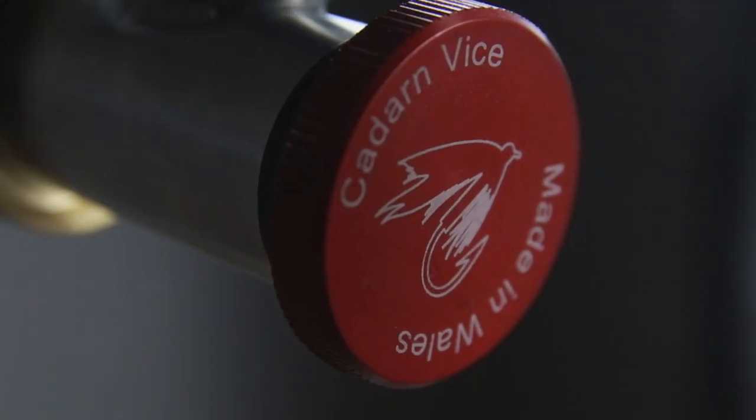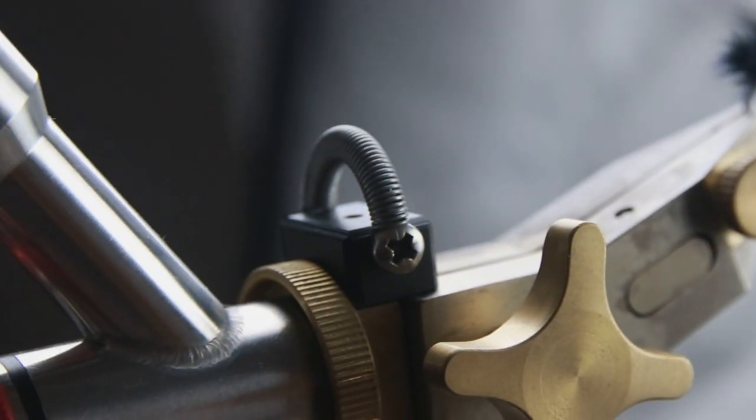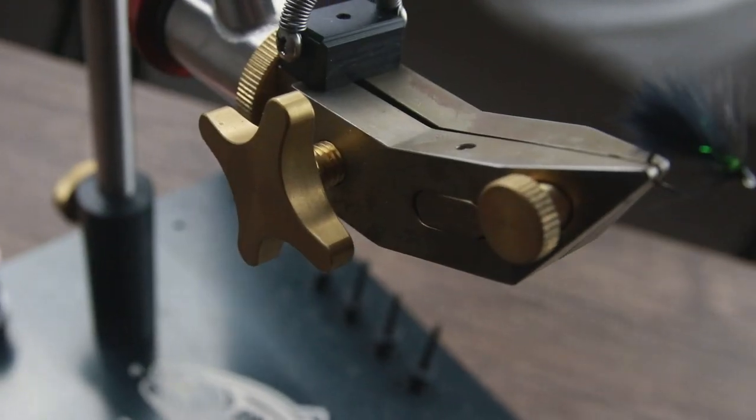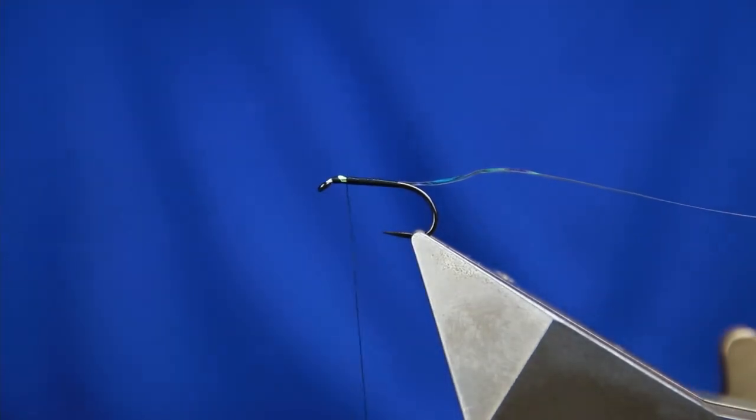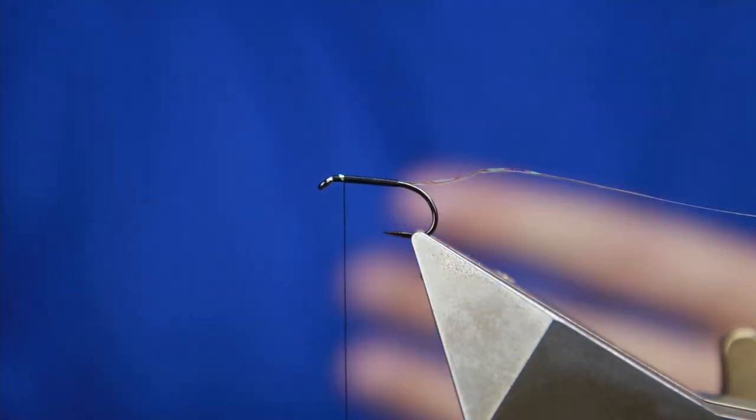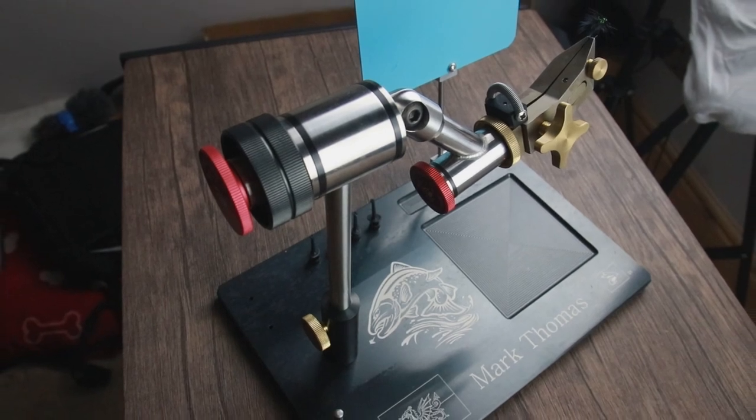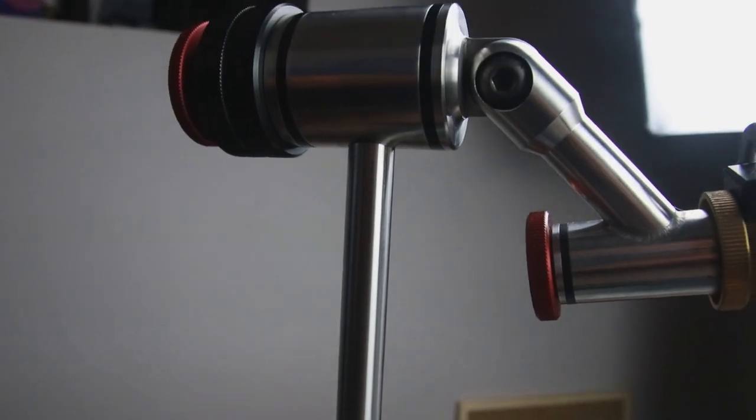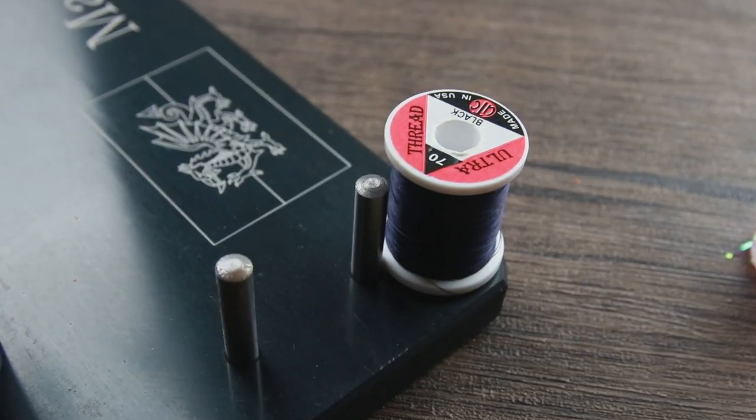So the vise I'm using today is a Cadan vise. This is a company that builds vises in Wales, a very small company. They haven't paid me to talk about this vise. This vise I'm actually using right now is a friend's, and I asked if I could borrow it to do a review because I'm that impressed with the quality. The vises themselves are bespoke—you can have your name custom engraved on it, you can have an icon, you can have a flag on the anodized base.